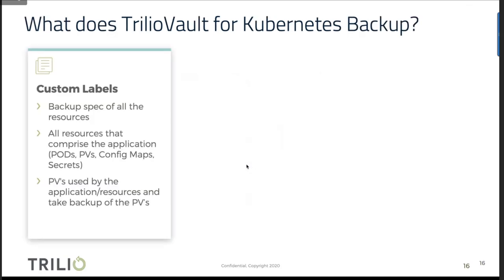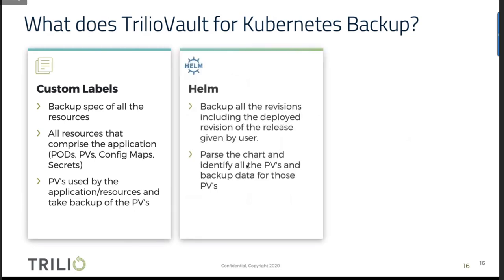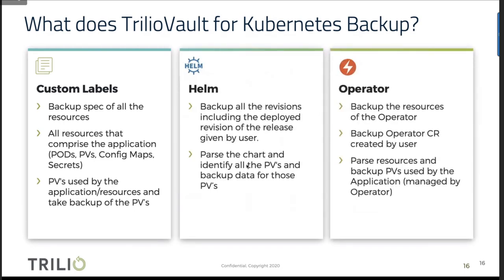Trilio Vault for Kubernetes backs up labels, Helm applications, and operator-based applications. For label-based backups, we look at the spec of all resources and back up the spec portion along with all resources the application comprises — whether pods, PVs, config maps, or secrets. Every PV found has its data captured and stored in our target location in QCOW2 format.